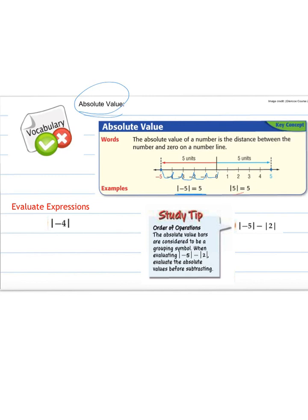Our next one, the absolute value of 5. Well, we count the distance from 0 to the number, which is 5. So 1, 2, 3, 4, 5, so our absolute value is 5.